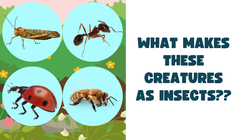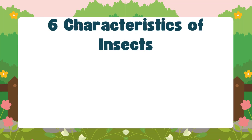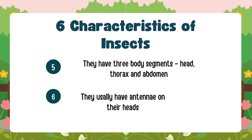What makes these insects? Why do we not call them by any other name? Well, they all have six characteristics in common. Firstly, they have three pairs of jointed legs, or six legs. They have soft bodies. They crawl or fly. They lay eggs. Their body is divided into three segments: the head, thorax, and abdomen, and they have an antenna on their heads.